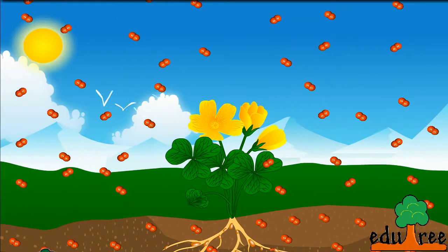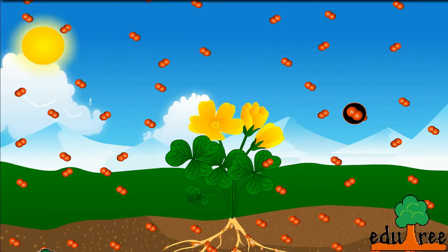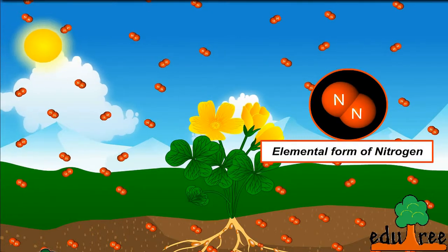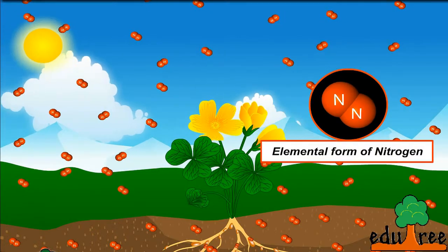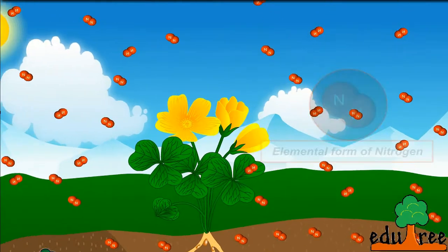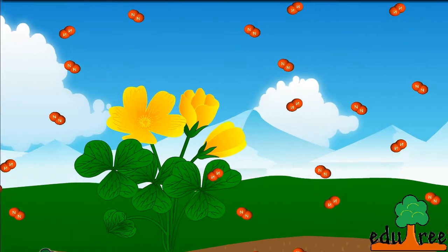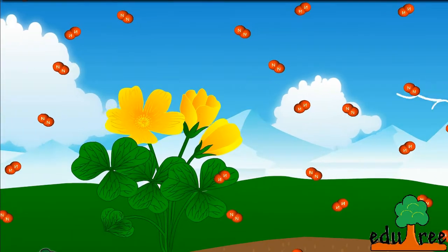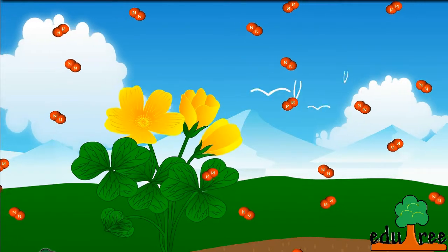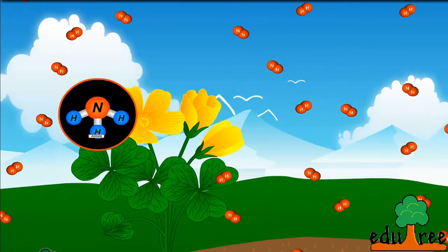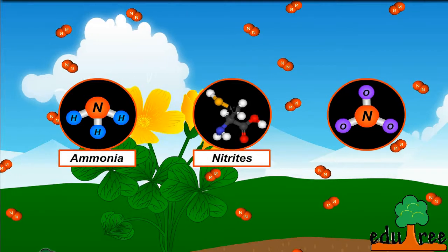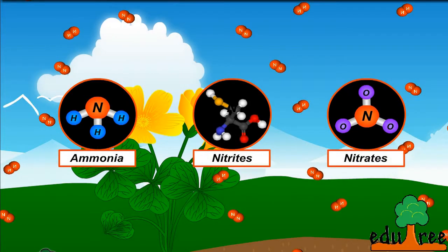However, air has a large amount of nitrogen in its elemental form, but plants cannot use nitrogen in its elemental form. Nitrogen must be converted into nitrogen-containing compounds such as ammonia, nitrites, and nitrates in order to be used by plants.